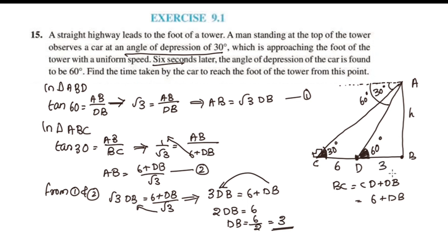DB is equal to 6 divided by 2, which equals 3. So DB equals 3 seconds. Find the time taken by the car to reach the foot of the tower from this point — that is 3 seconds.